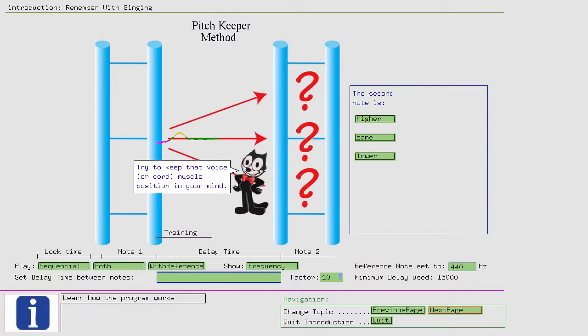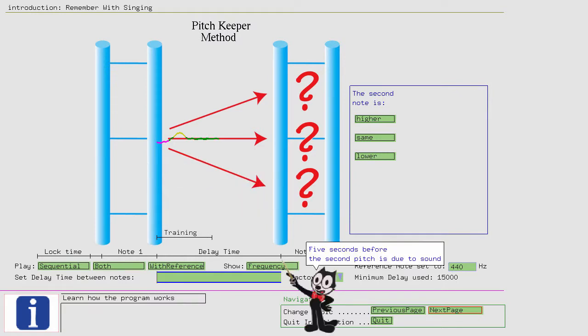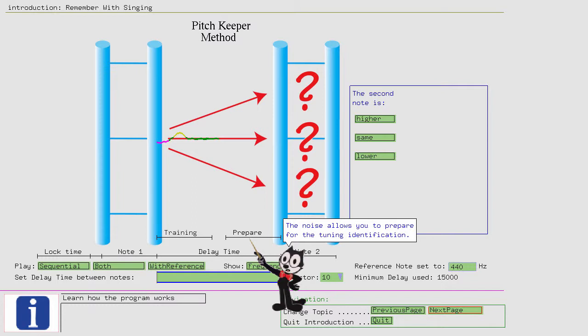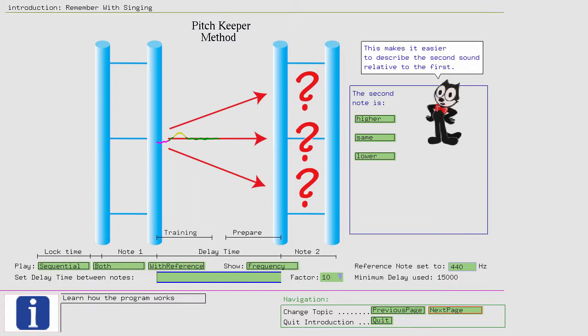Try to keep that voice or chord muscle position in your mind. You must remember it when you hear the second pitch. Five seconds before the second pitch is due to sound, the program alerts you with a white noise. The noise allows you to prepare for the tuning identification. Recall the muscle positions and try to sing or hum the previously sung sound. This makes it easier to describe the second sound relative to the first.